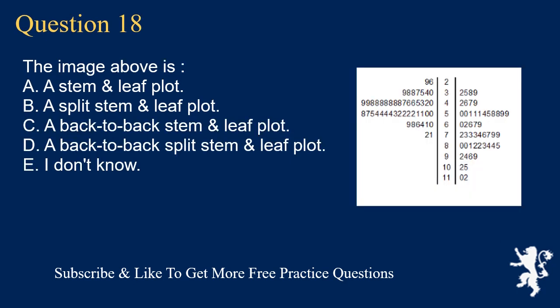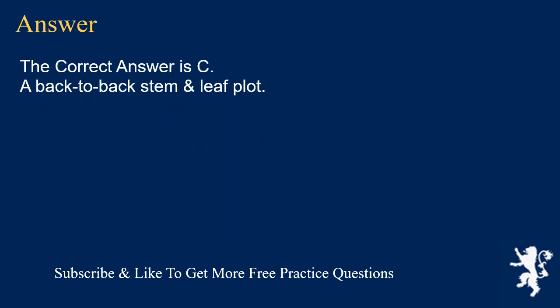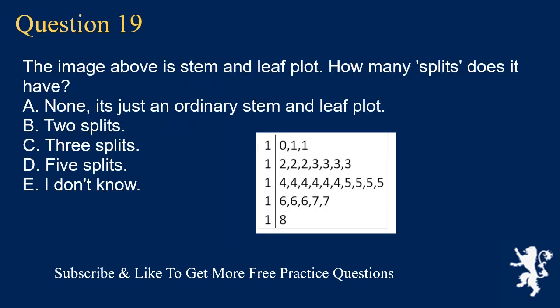Question 18: The image above is A. a stem and leaf plot, B. a split stem and leaf plot, C. a back-to-back stem and leaf plot, D. a back-to-back split stem and leaf plot, E. I don't know. The correct answer is C, a back-to-back stem and leaf plot.